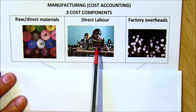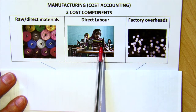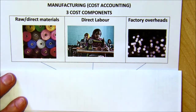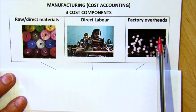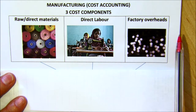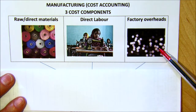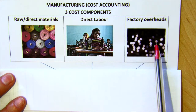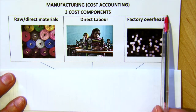Secondly, there's got to be labour — people that are working on machines that are sewing up the pieces to make the t-shirts. And then the third component is what we call our factory overheads. These are our overheads, extra costs. So for example you need rent, you need electricity. These are costs that are essential for this business to run, but they're not directly involved, and these are what we refer to as our indirect costs.